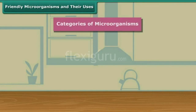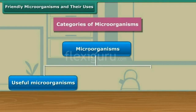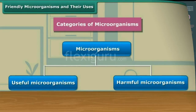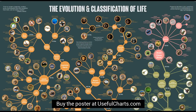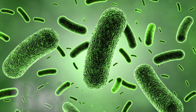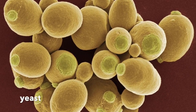There are two categories of microorganisms: useful microorganisms and harmful microorganisms. Two examples of useful microorganisms are bacteria and yeast.